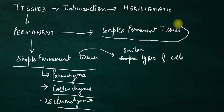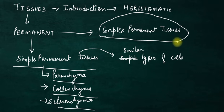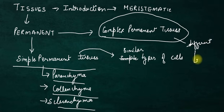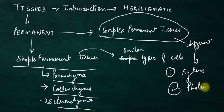If we talk about complex permanent tissues, these are made of different types of cells — unlike simple permanent tissues. There are two types of complex permanent tissues: xylem and phloem. These are very important for the exam. We will discuss simple permanent tissue types first.